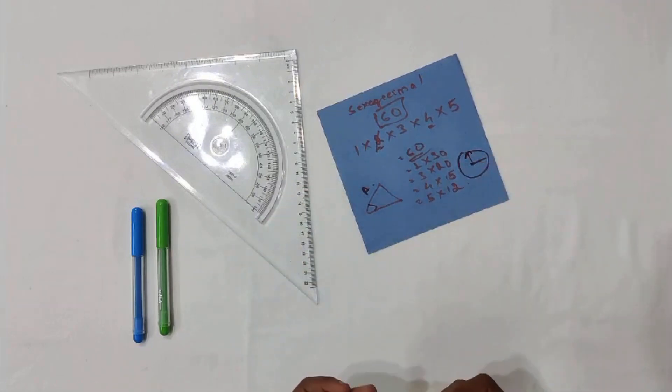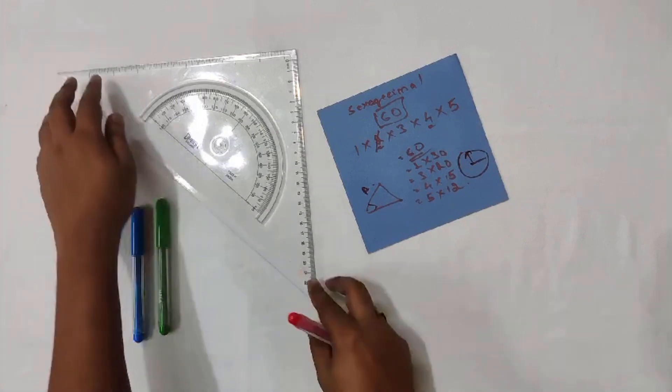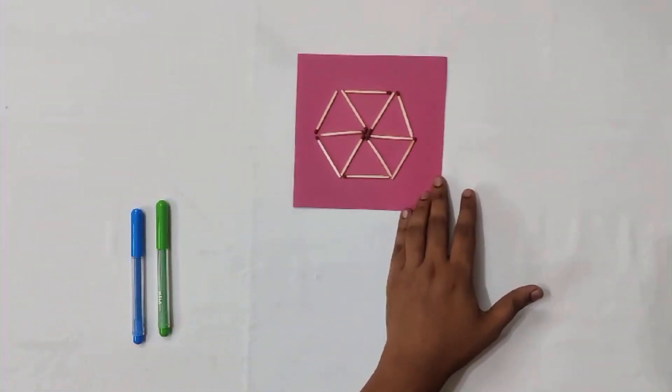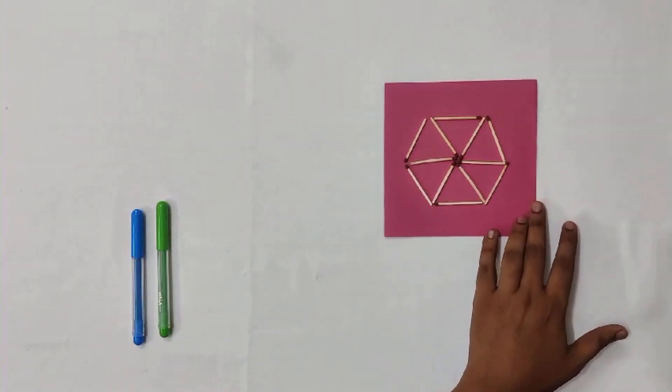In the next video, we will discuss how the sexagesimal system is connected to time and angles. For that, we will be comparing it to equilateral triangles and how it is related to the circle.